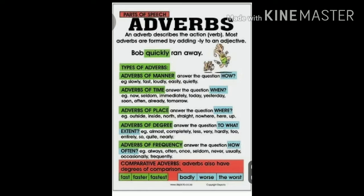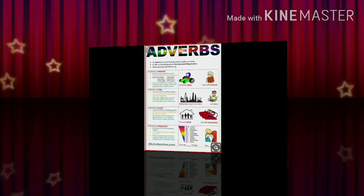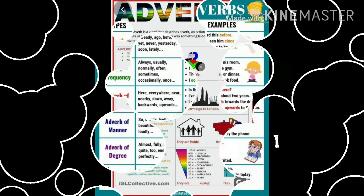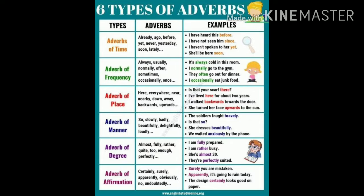Definition of adverb: an adverb is a word which modifies the meaning of a verb, an adjective, or another adverb. The adverb gives more information about the verb in the sentence. Adverbs may be divided into the following classes according to their meaning: 1) adverbs of time, 2) adverbs of frequency, 3) adverbs of place, 4) adverbs of manner, 5) adverbs of degree, etc.